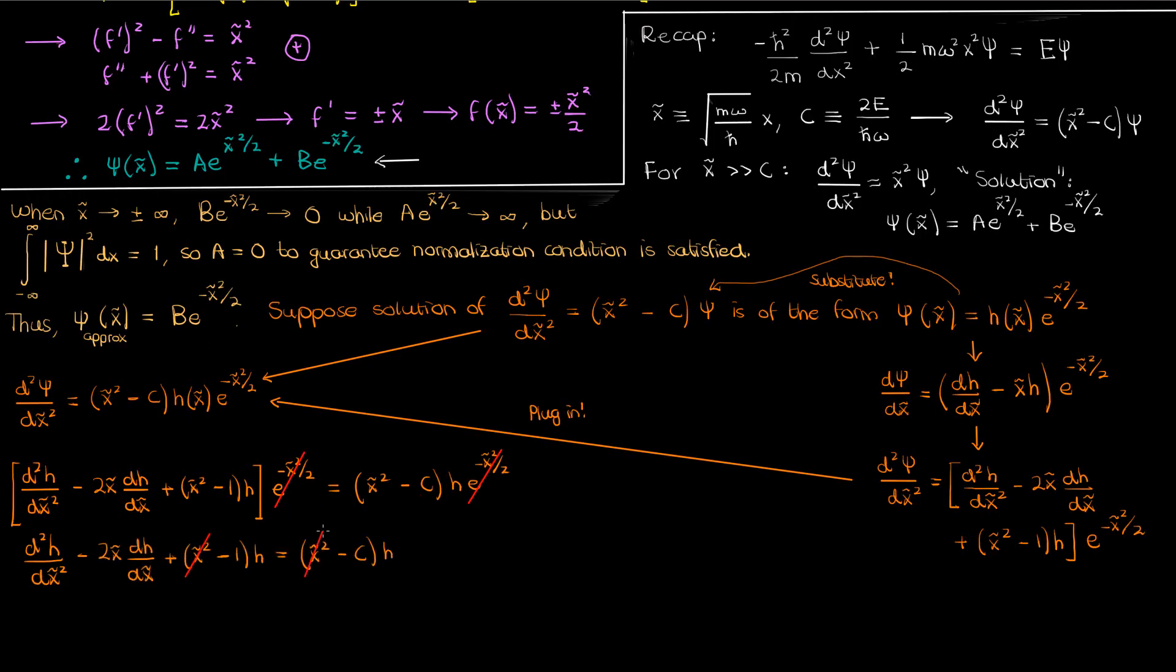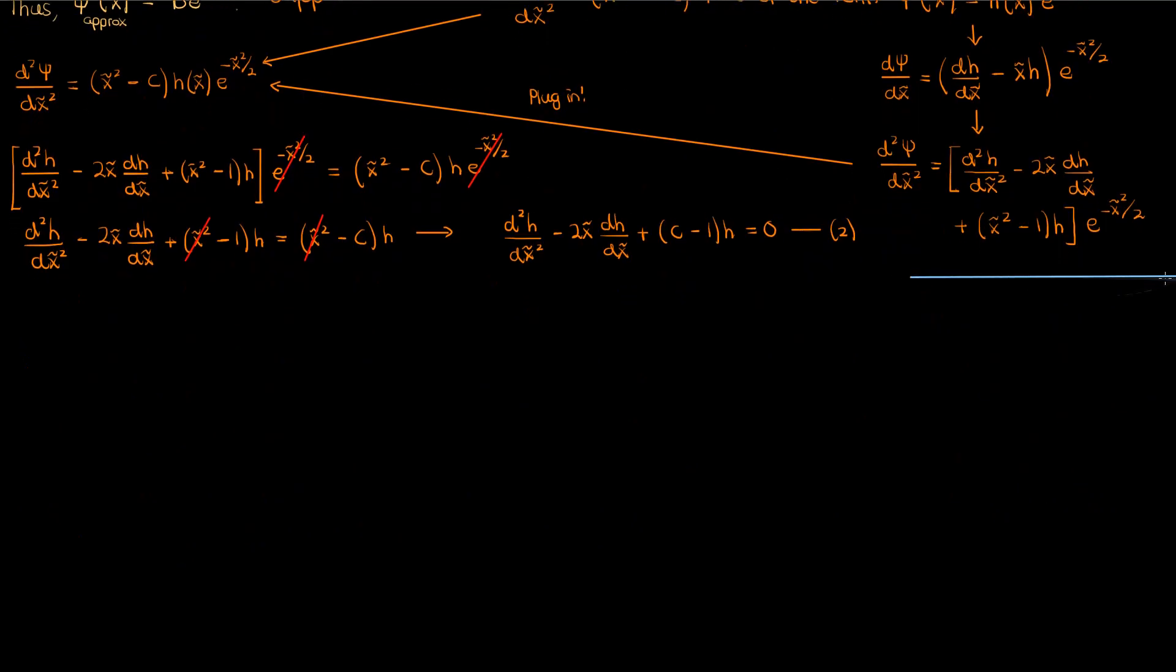Let's now simplify this. We can cancel the exponential on both sides since the exponential is never zero. The x tilde squared terms cancel, and after moving everything to the left this is what we get for our differential equation in h. I'm going to call this equation 2. Now does this equation remind you of something?